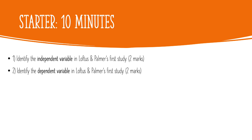Number two is to identify the dependent variable — what did Loftus and Palmer measure? Remember when we're stating independent and dependent variables we want to operationalize the variables, make them measurable and testable, in other words making it very specific.